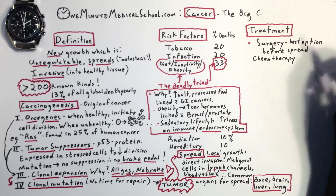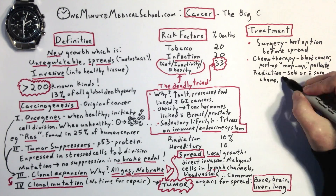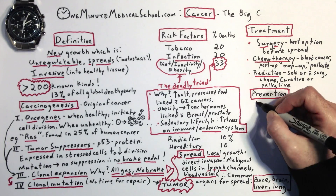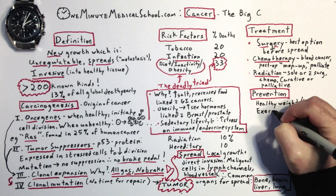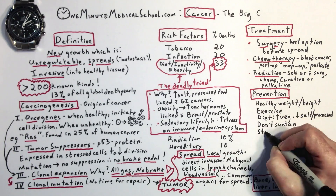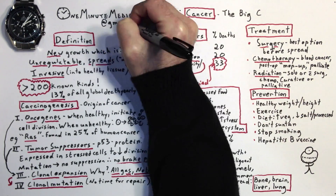Treatment is by surgery, chemotherapy and radiotherapy. Prevention includes maintaining healthy weight, exercising, eating lots of veg, and watching out for salt and processed foods. Don't suntan. Stop smoking. Get a hepatitis vaccine.